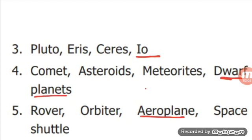Next, Comet, Asteroids, Meteoroids, Dwarf planet. Dwarf planet is the odd one. Next, Rover, Orbiter, Aeroplane, Space Shuttle. Aeroplane is the odd one. It is one of the means of transport. The other three - Rover, Orbiter, Space Shuttle - are space exploration vehicles.